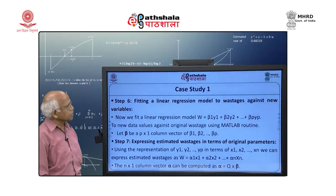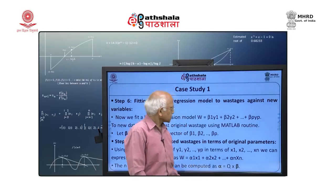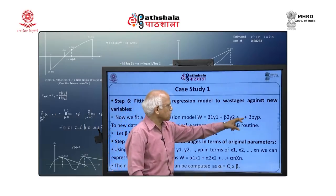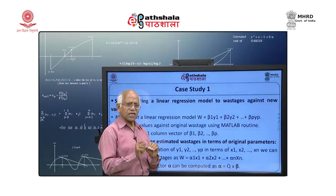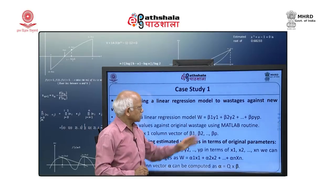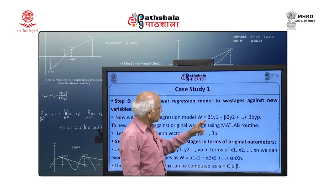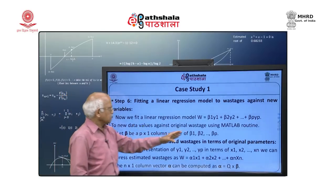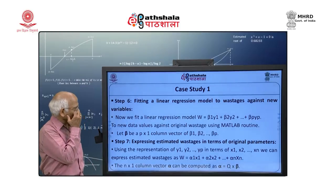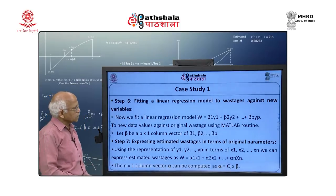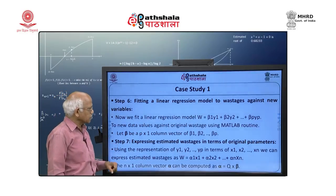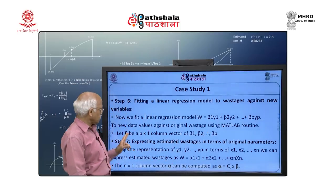Step 6: fit a linear regression model to wastages against the new variables y_1, y_2, … y_p. We fit the model W = β_1 y_1 + β_2 y_2 + … + β_p y_p using multivariate regression via MATLAB. This gives a vector β̄ of p components. Step 7: express in original parameters. Since the user needs results in original parameters x_1, x_2, … x_n, we compute ᾱ = Q × β̄, giving W = α_1 x_1 + α_2 x_2 + … + α_n x_n.